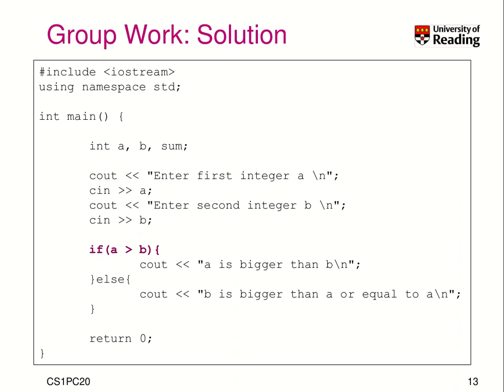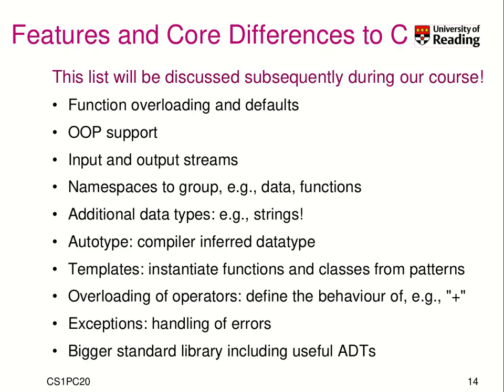Here is a potential solution. You can see 'using namespace std'. We need three variables: a and b. The variable 'sum' is actually not needed and we could rewrite this. We say 'please enter the first integer' using cout, then from cin we read a. We ask for the second integer b, and read into b. Now we have our condition: if a is bigger than b, we use cout to say a is bigger than b. Otherwise, we say b is bigger than a or equal. That's very simple code.